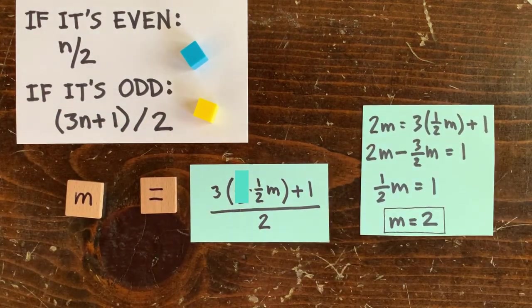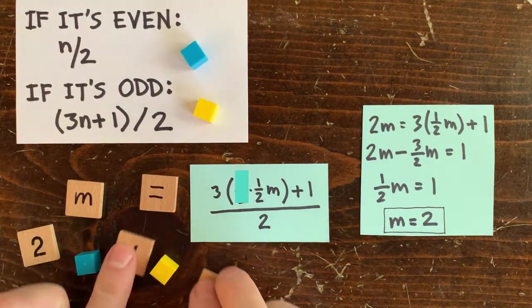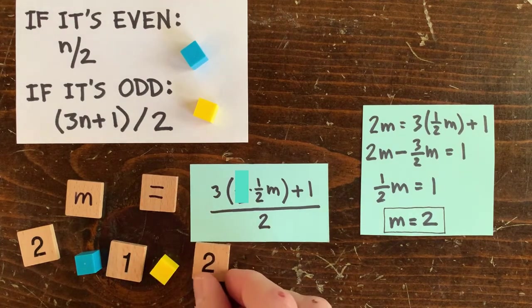Sure enough, if we start with 2, divide it in half, we get 1, then 3n plus 1 over 2, and we get 2 back again. This is totally automatic, but we don't want a loop involving 1.